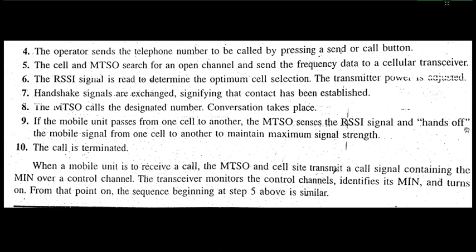If the mobile unit passes from one cell to another, the MTSO sends the RSSI signal and hands off the mobile signal from one cell to another. Handoff is widely used in cell phone technology — when you are moving from a weaker cell to a stronger cell, your connection is switched from one cell to another, and that situation is known as handoff. The call is terminated when done. When a mobile unit receives a call, the MTSO and cell site transmit a signal containing the MIN over a control channel; the transceiver monitors the control channels, identifies its MIN, and then turns on.